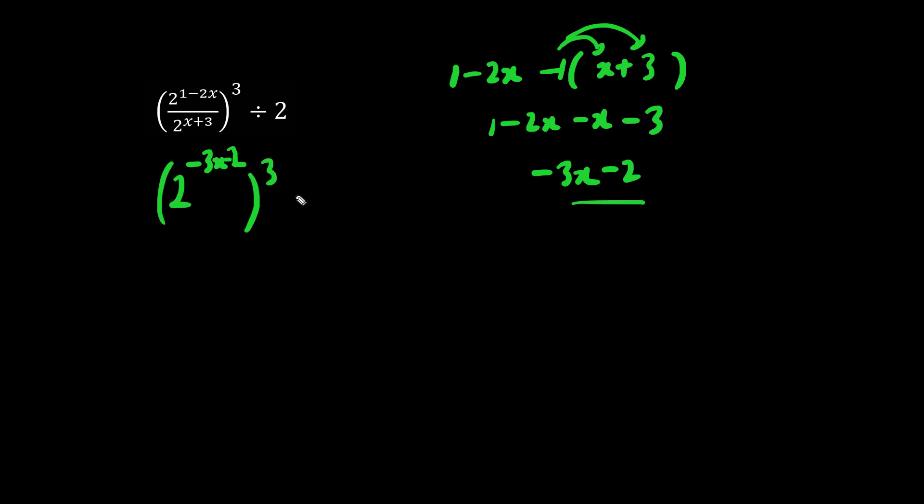We have this expression cubed, all divided by 2. We have exponent, bracket, exponent. We're going to multiply these. So we have 2 to the negative 3x times 3 is minus 9x. Negative 2 times 3 is minus 6, and we're going to divide by 2 to the 1. We have the same base, so let's subtract exponents.